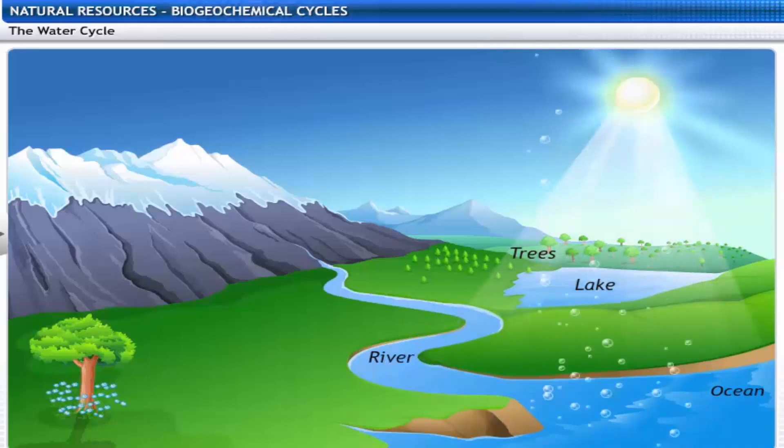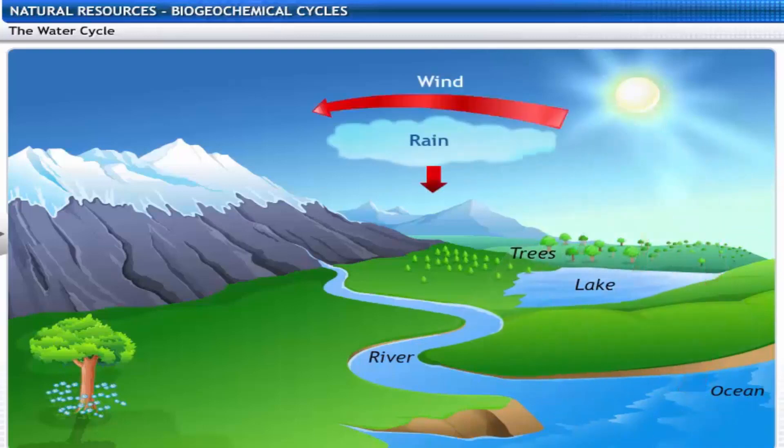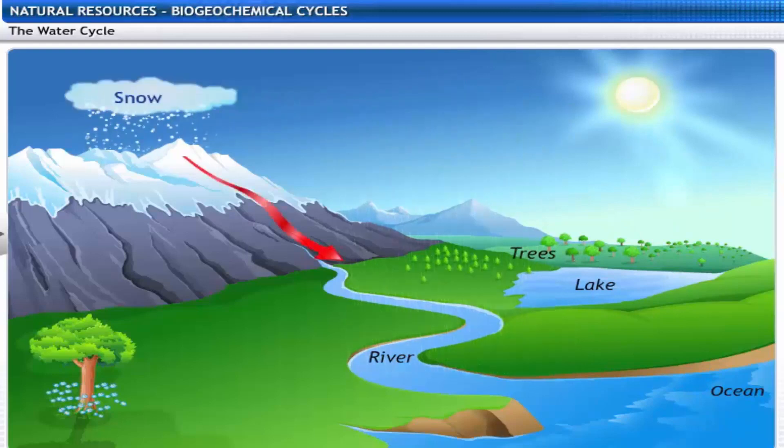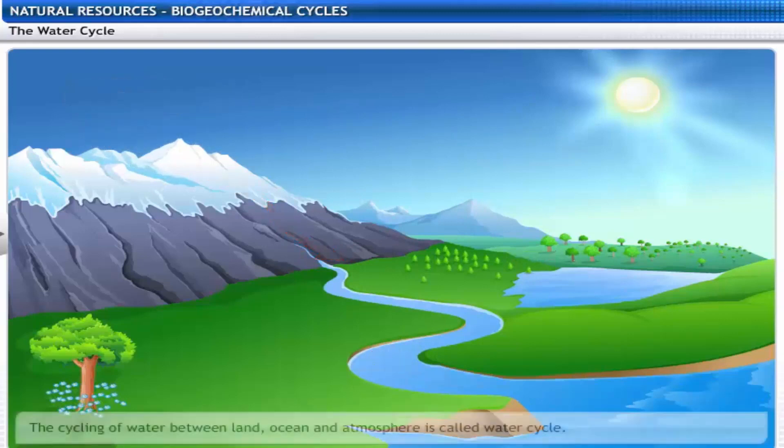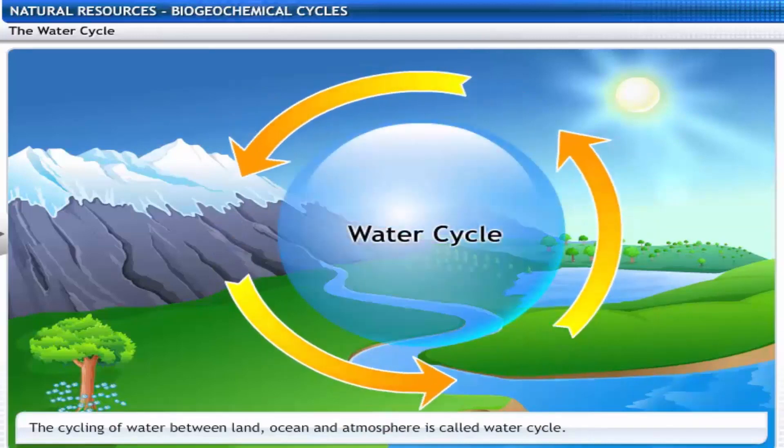Water evaporates from the water bodies and returns as rain, which in turn flows back into the seas via rivers. This cycle of water between the land, the ocean and the atmosphere is called the water cycle.